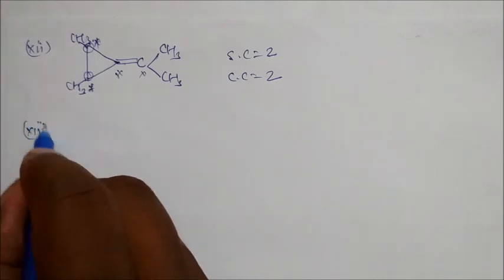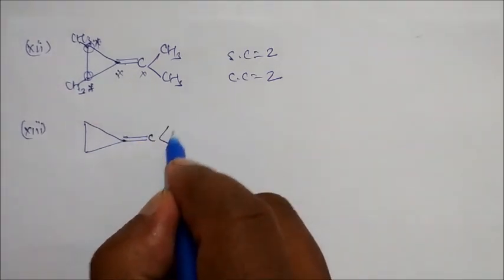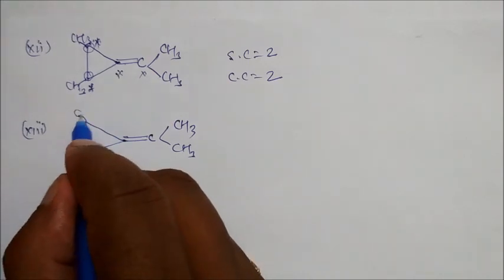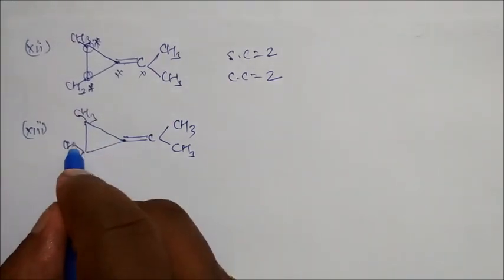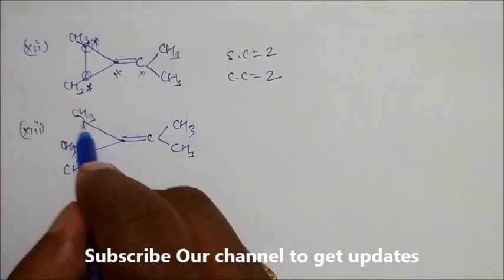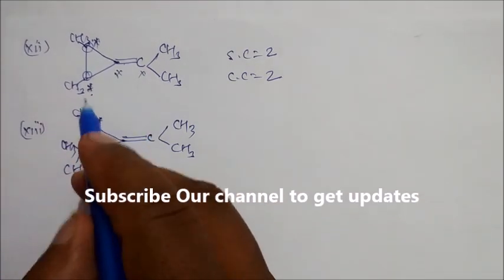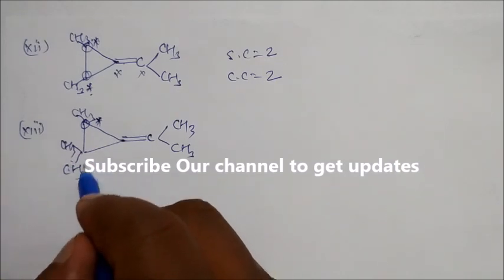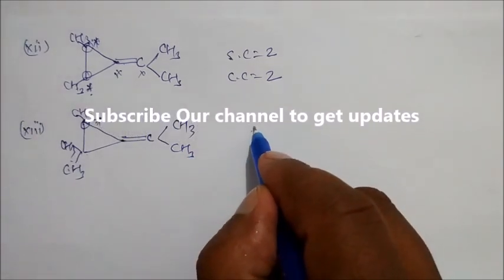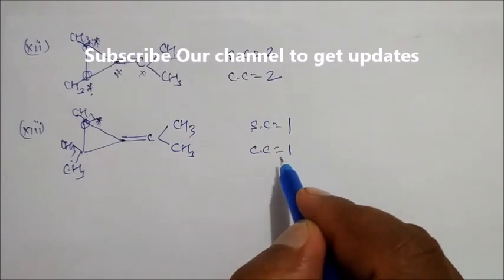Let us take another molecule — let us change it a little. Suppose this is your double bond carbon, and here is CH3 and this is CH3. Instead of one methyl, put here one methyl and here put two methyls — CH3 and CH3. Now this is a stereocenter and chiral center also. Here nothing is there — since two methyl groups are present, this is not a stereocenter. If a stereocenter is not there, then definitely a chiral center is not there. So we can say stereocenter in this case is one and chiral center in this case is one.